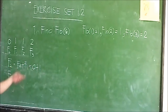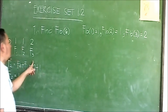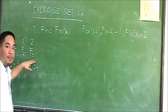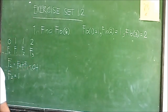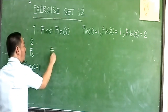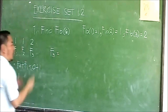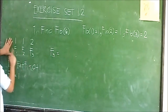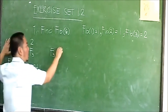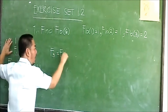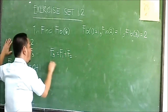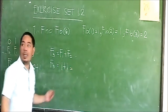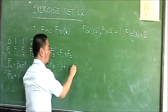Let's check if this pattern applies further. F sub three is equal to the sum of the two previous terms: F sub one plus F sub two, which is one plus one, and that equals two.